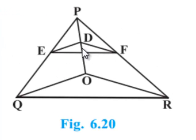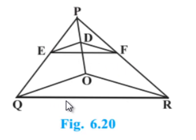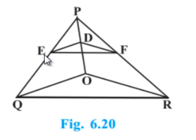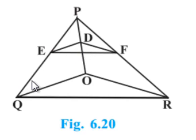In order to prove that EF is parallel to QR, if we are able to prove that PE by EQ is equal to PF by FR, then from the converse of the Basic Proportionality Theorem, we can say that EF is parallel to QR. To prove that, we need to consider two triangles, POQ and POR, and by applying the Basic Proportionality Theorem, we get the ratios of PQ and PR in terms of PD and DO.